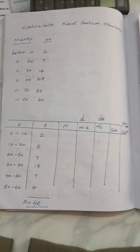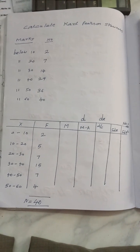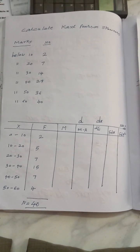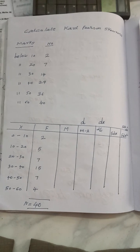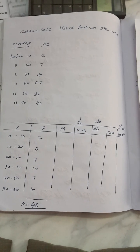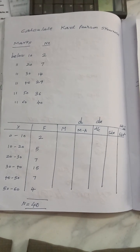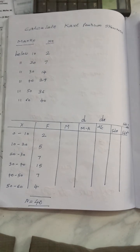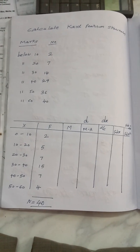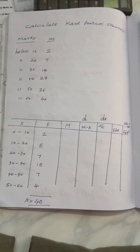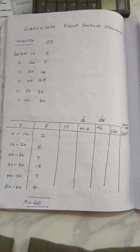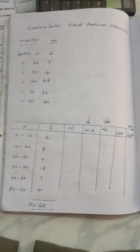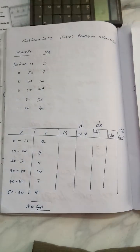My dear second year students, in statistics, learning of Karl Pearson's coefficient of skewness is very important. The formula is mean minus mode by standard deviation. My dear students, whenever the question is given as below, you have to rearrange the data like this.